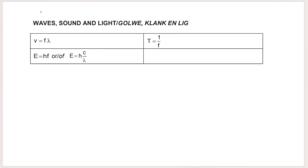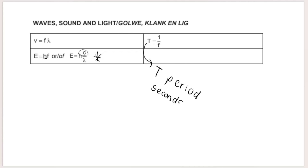You also have a formulae section for the waves, sound, and light section — covering transverse waves, longitudinal waves, and electromagnetic waves. The formula at the bottom is used for electromagnetic waves where h is Planck's constant and c is the speed of light. You need to know these symbols and what they mean. T is period, measured in seconds, and T = 1/f where f is frequency measured in hertz (Hz).